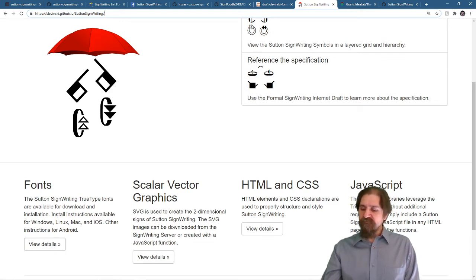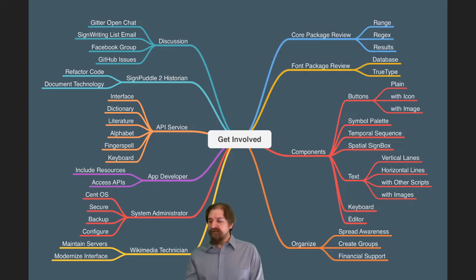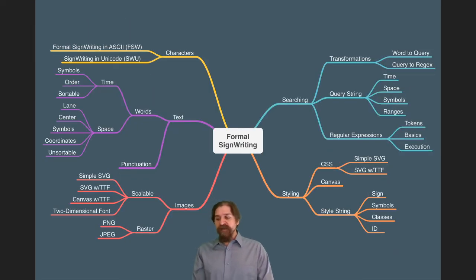If we're going to be getting involved in SignWriting, it also helps if you understand Formal SignWriting. Formal SignWriting has five major sections dealing with the character types of SignWriting in Unicode SWU and Formal SignWriting in ASCII FSW. You need to understand both of those. You can talk about text, which is made up of sign words and punctuation. There's also images. You need to know the difference between scalable and raster.